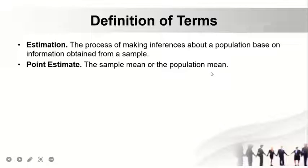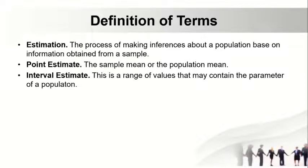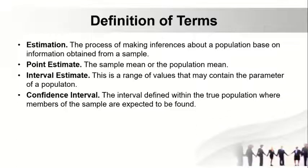Interval estimate: this is a range of values that may contain the parameter of a population. Confidence interval: the interval defined within the true population where members of the sample are expected to be found.